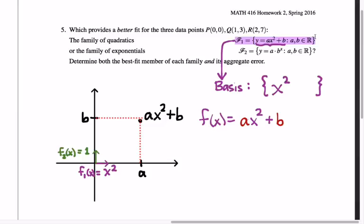In the case of the first space of functions F1, we can see that it's a vector space because we can directly find a basis for it. What is its dimension as a vector space? F1 is two-dimensional because its basis has two elements, the function x squared and the function 1. From that two-dimensional space of functions, we want to find the one which is closest to passing through these three points.